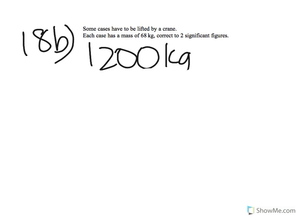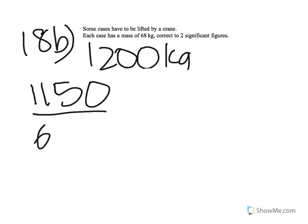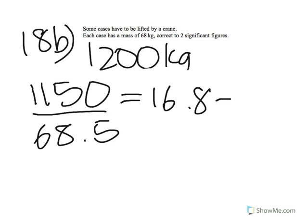You find the lower bound of the mass the crane can lift in one load — 1,200 kg gives a lower bound of 1,150. Then you find the upper bound of the mass of each crate, which is 68.5. Dividing gives an answer of 16.8. Since the word is 'safely,' you round down to 16, because you can't have 16.8 crates, and 16 is safer than 17.